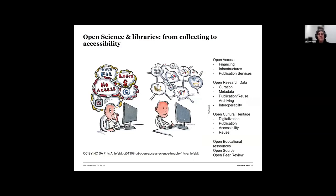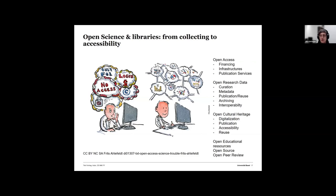With open science, libraries are shifting their focus. Traditionally, libraries were concerned with collecting everything in one place and making it available for the local community. Shifting to digital material and open science, we are more concerned not with collecting but with making accessible. In open access, that means providing financing to publish things openly, providing infrastructure for publishing articles and books, and offering help with open access publication. In open research data, we help with data creation, choosing metadata schemas to describe data, publishing and reusing data, archiving it, and making our own infrastructures interoperable.